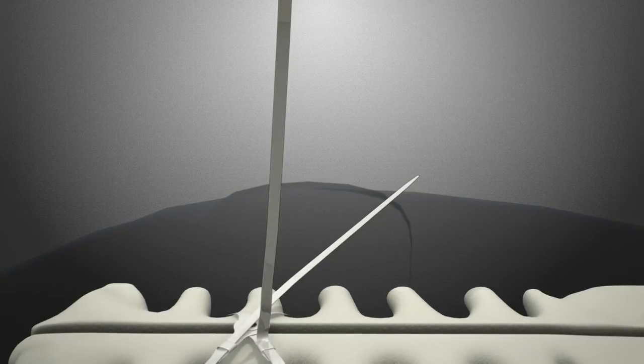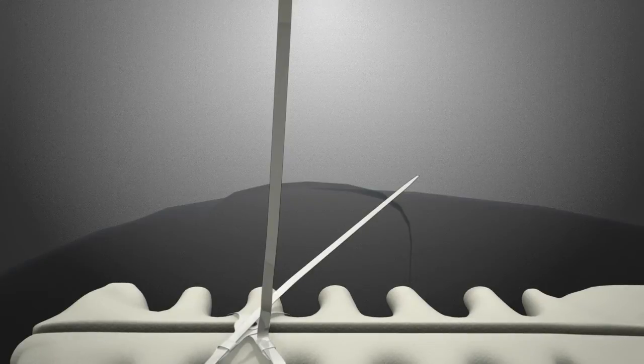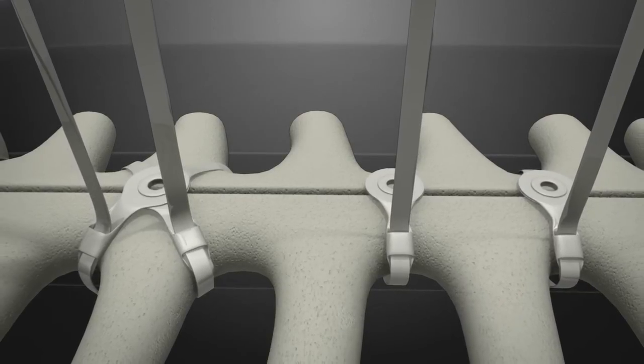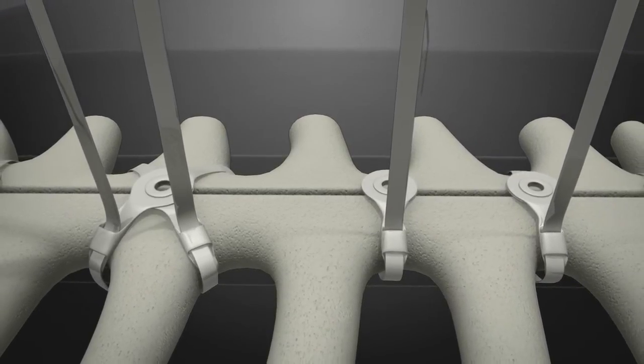This action holds the tension on the sternum while tension is given to the other straps. This method serves to distribute the force of closure across the sternum, much like tightening the lug nuts on a wheel.